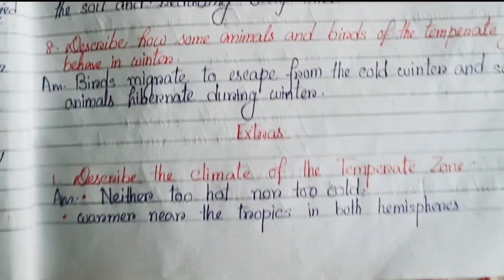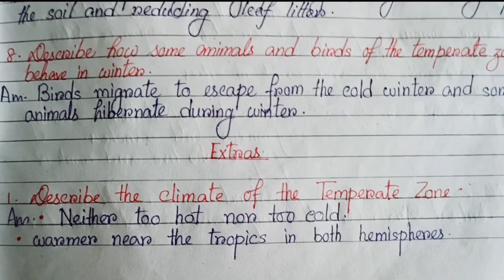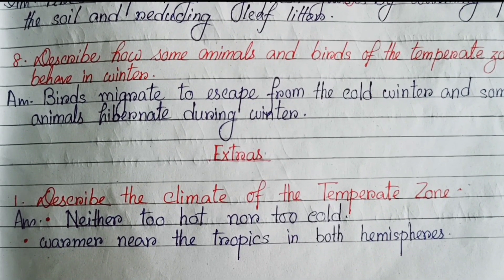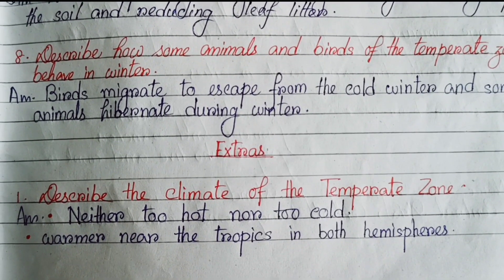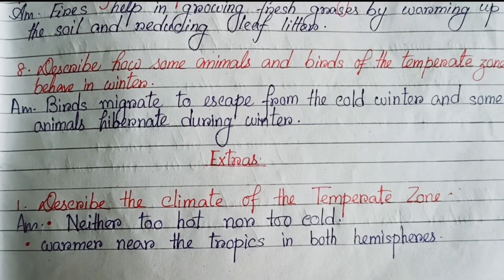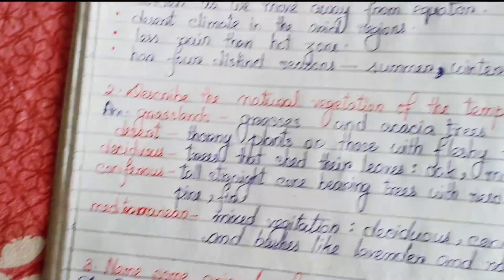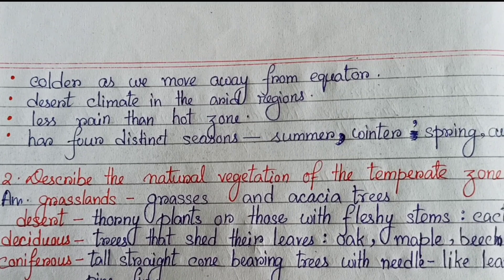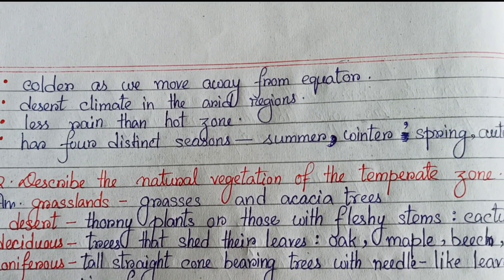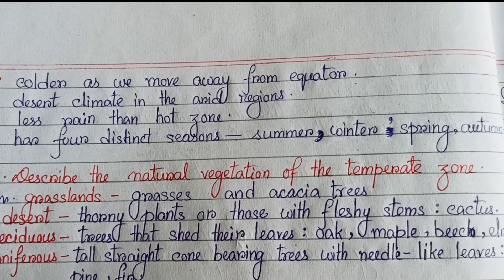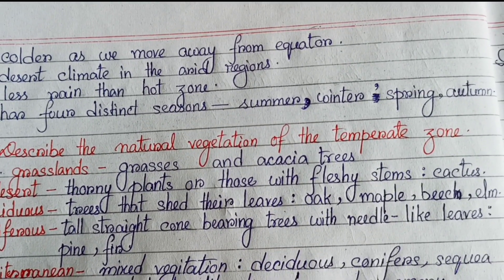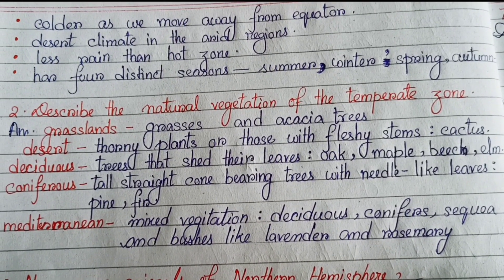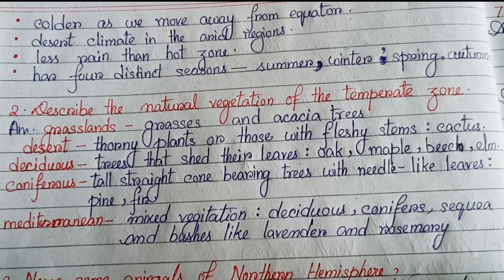Now we have some inside question answers from the chapter. Number one: describe the climate of the temperate zone. Neither too hot nor too cold; warmer near the tropics in both hemispheres; colder as we move away from the equator; desert climate in the arid regions; less rain than the hot zone; has four distinct seasons: summer, winter, spring, and autumn. Number two: describe the natural vegetation of the temperate zone. Grasslands have grasses and acacia trees.